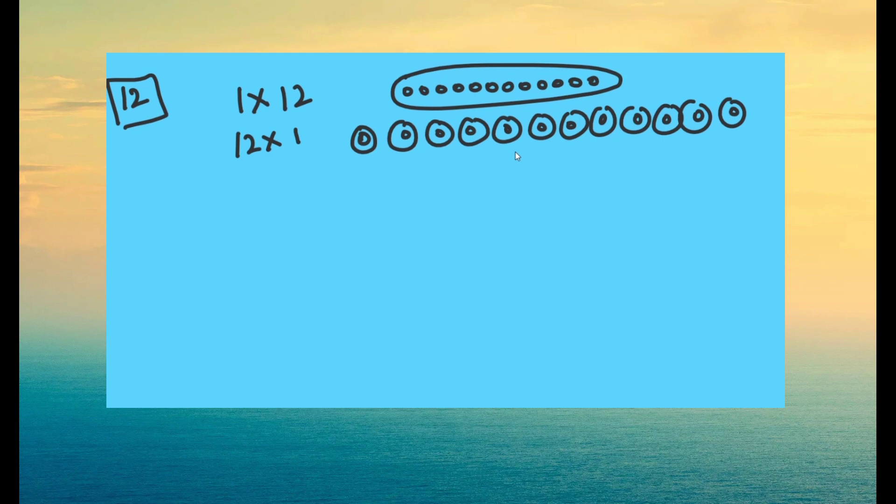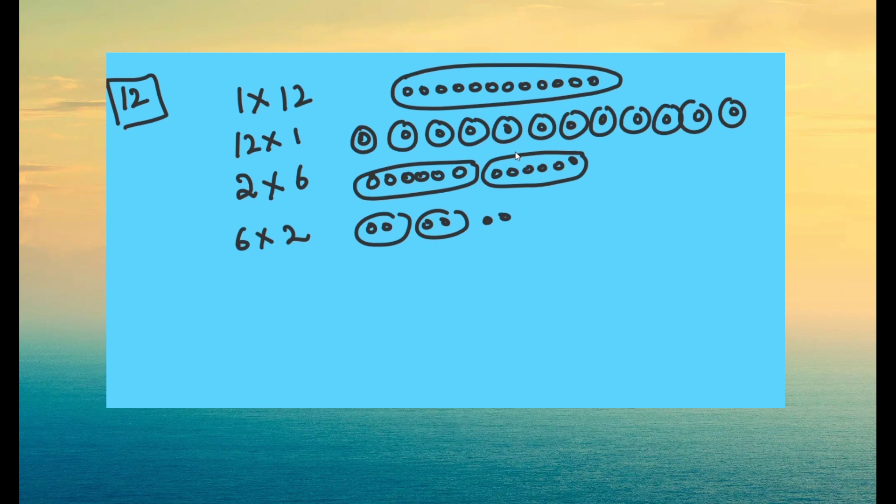What is another way of writing twelve? It's two into six. What does it mean? It means two groups of six. First group of six and the second group of six. So we have two groups of six. We also have six times two. Two six to the twelve. Which means six groups of two.